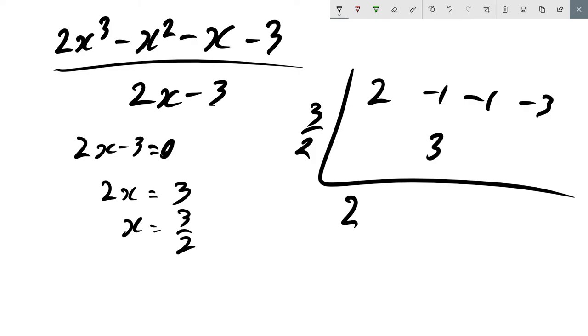Drop the first coefficient down, 2, and then we're going to actually do the process. So 2 times this is 3, add to get 2. 2 times that is 3, add to get 2. 2 times that is 3, add to get 0.